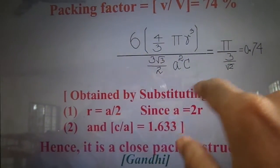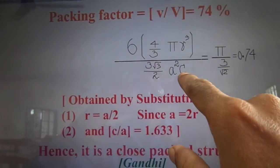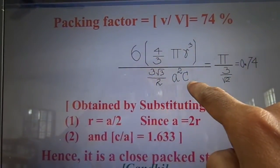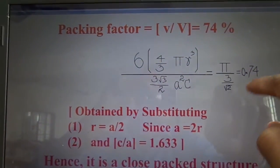Volume of the unit cell, we have calculated in our earlier picture. So this ratio leads to 0.74 or 74%.